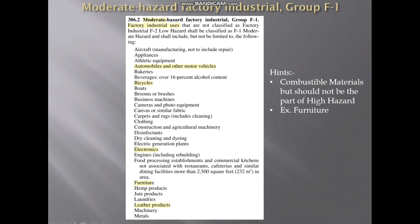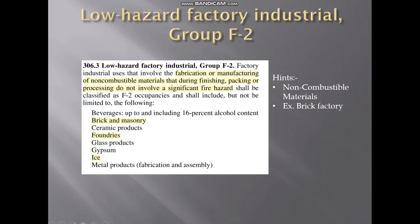In moderate hazard F1, you can see combustible materials like furniture, leather products, and bicycles — these come under moderate hazard, not high hazard. In the next category, F2 is low hazard, dealing with non-combustible materials — fabrication or manufacturing of non-combustible materials. For example, a brick factory, which will not produce any highly flammable or high hazard items. Similarly, foundries come under this low hazard subgroup.